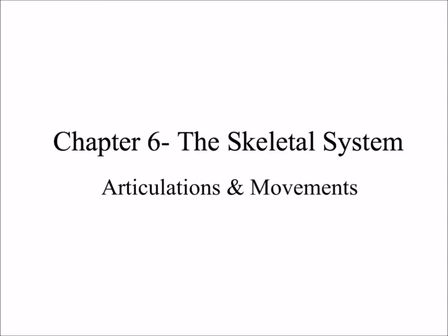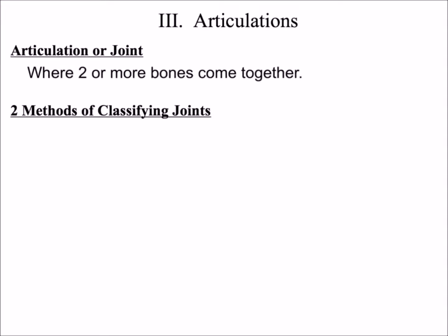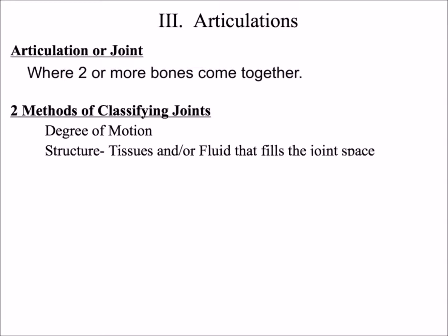In the next section of the skeletal system, we're going to talk about articulations and movements. An articulation or joint is where two or more bones come together, and there are two methods of classifying joints. The first method is by the degree of motion, and the second method is by what fills the joint space.